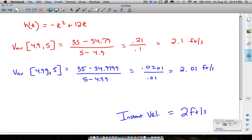And no matter how close you get to 5, if we do 4.999 or 4.9999999, this number more than likely is going to get really, really, really, really, really close to 2, but it's never going to quite be exactly 2. So we're going to say our instantaneous velocity at 5 seconds is 2 feet per second.